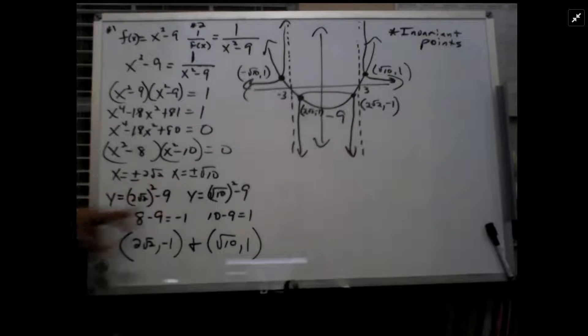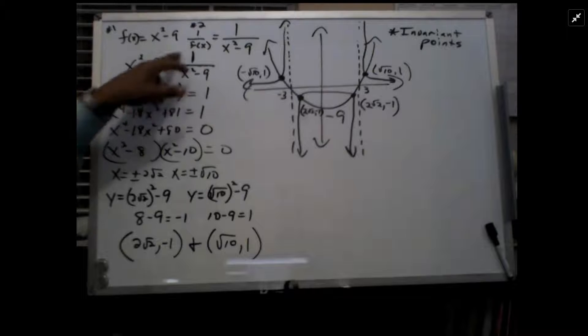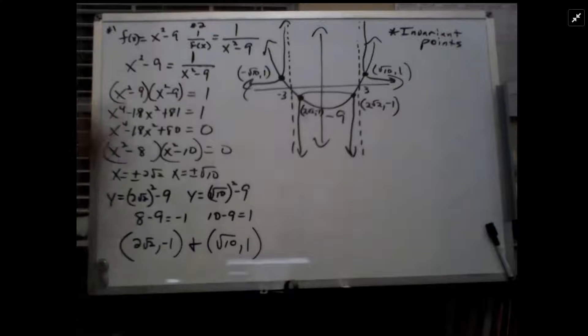Since we have the x numbers, you come to get the y numbers by plugging the x numbers into the original function, the original function being either the x squared minus 9 or the 1 over x squared minus 9. I'll choose the x squared minus 9. It's a lot easier to work with.